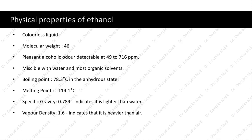Let us see the physical properties of ethanol. It is a colorless liquid with a molecular weight of 46. It gives a pleasant alcoholic odor detectable at 49 to 716 ppm. It is miscible with water and most organic solvents. Its boiling point is 78.3 degrees Celsius in the anhydrous state. Melting point is minus 114.1 degrees Celsius. Specific gravity is 0.789, indicating it is lighter than water. Vapor density is 1.6, indicating it is heavier than air.